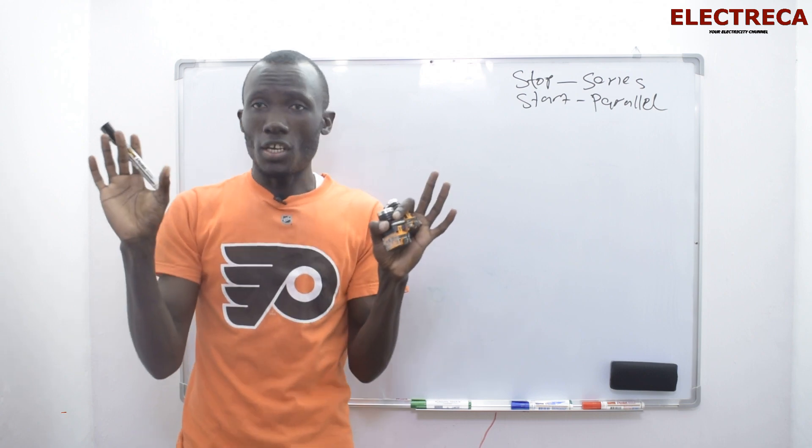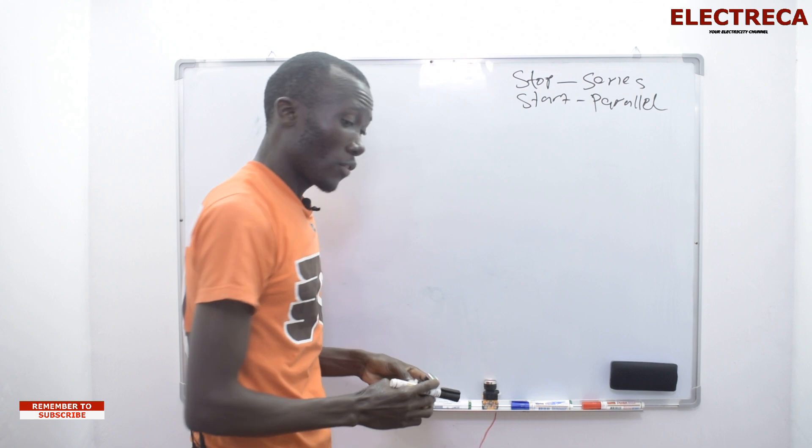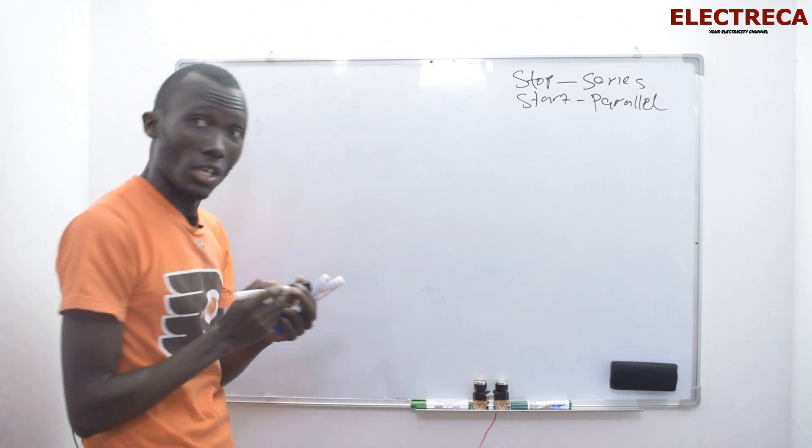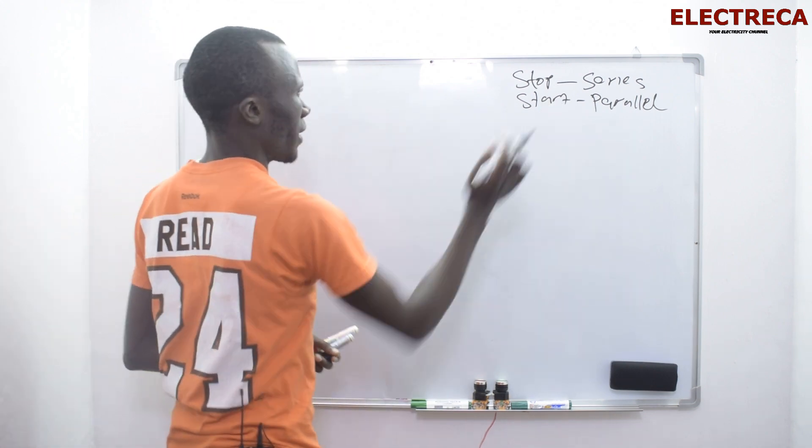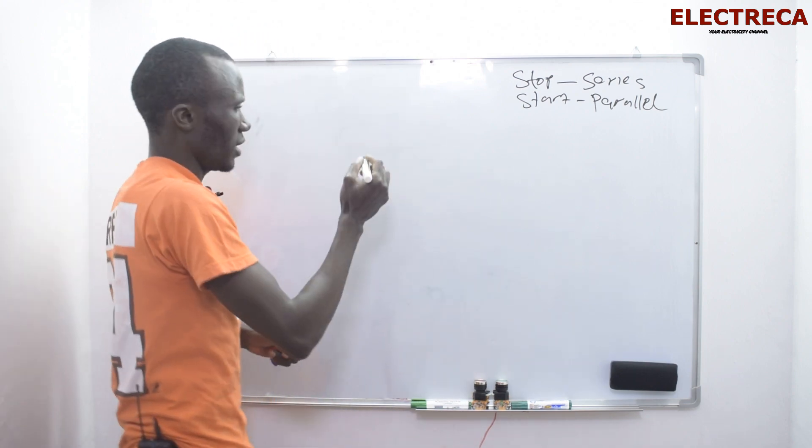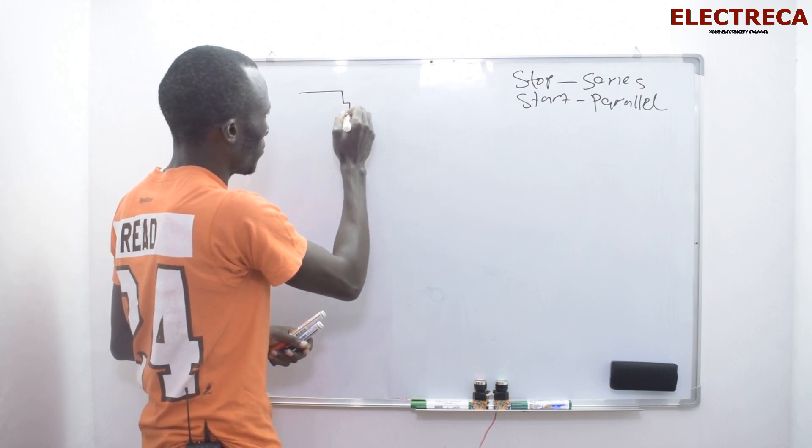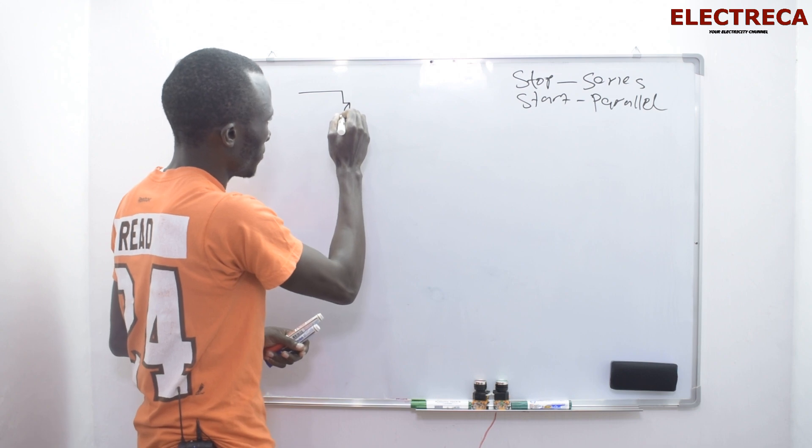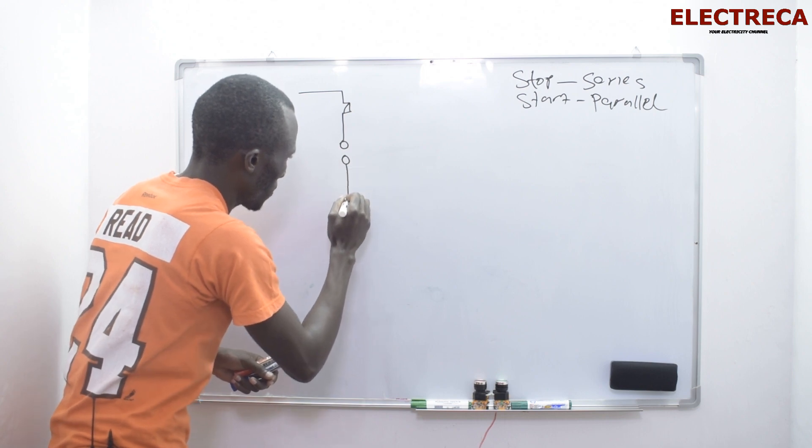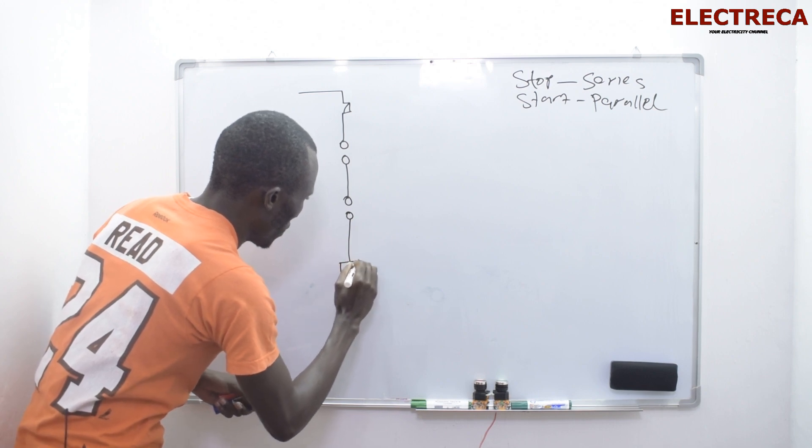That's the one thing you have to note first. Now without further ado, I want to draw this circuit here. So let us begin with the parallel. Let us have our circuit here. So you have your overload here, you have your stop, you have your start, and you have a coil here.